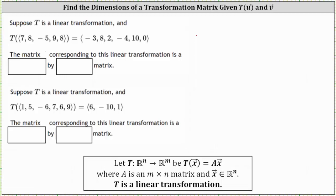Suppose T is a linear transformation and T of the given input vector equals the given output vector. We're asked to determine the dimensions of the corresponding transformation matrix. Notice how the input vector has five components and the output vector has six components, and therefore this is a transformation from R5 to R6.